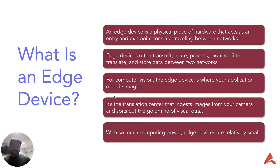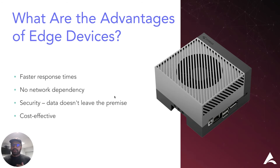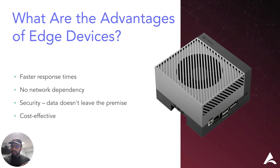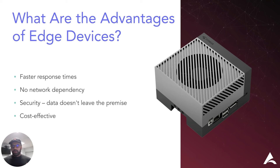What are the advantages of edge devices? There are four major advantages. First, faster response time — this comes from the edge device being physically present at the location relevant to the application, so you don't have to transmit data and there's no network dependency. It is a fully self-sustained machine. Second, security — since no data is leaving the premise, it adds a layer of security to the edge device and for customer data.